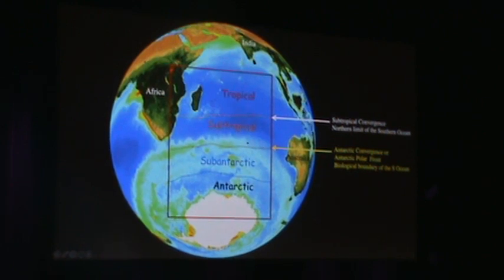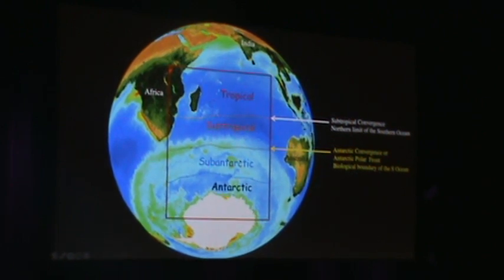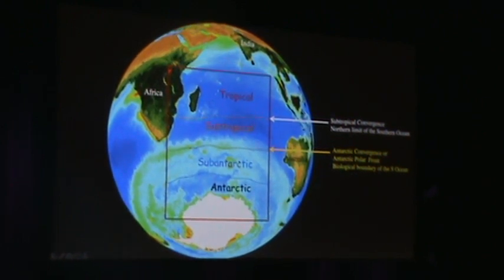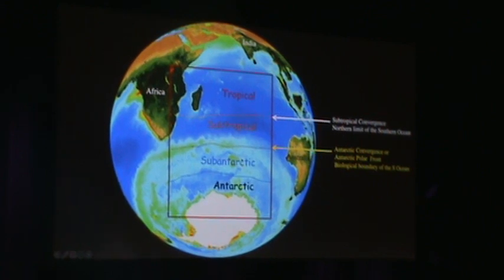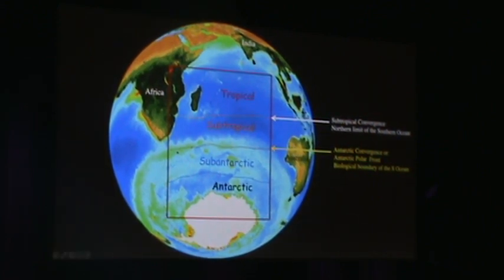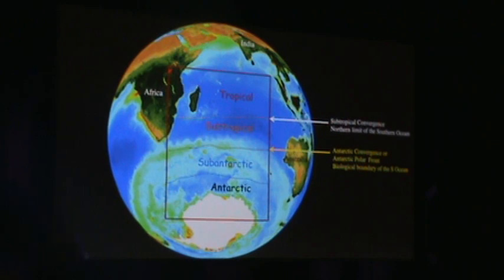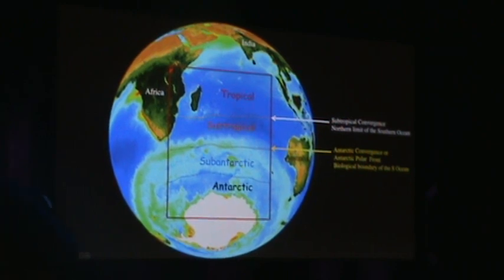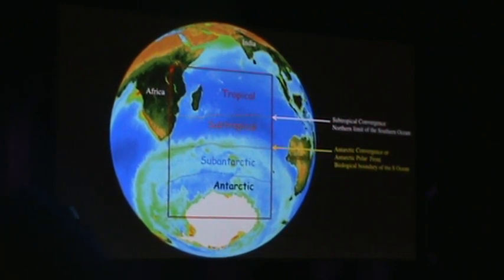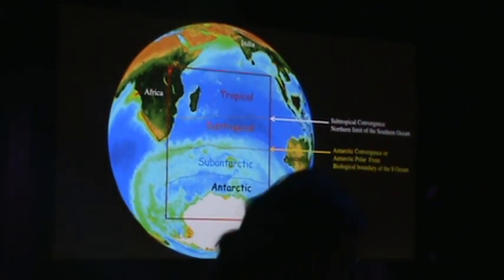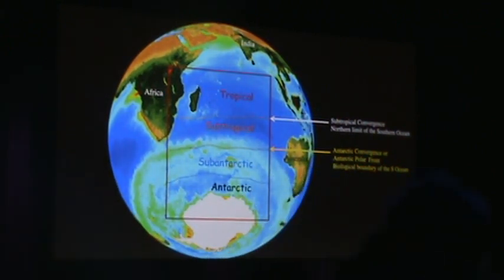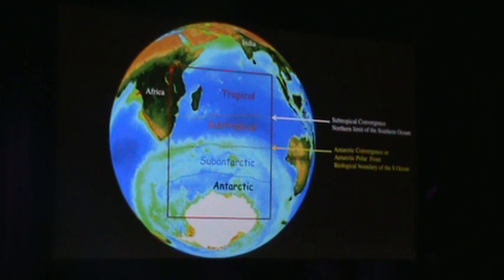Everything south of this boundary is more productive. We have much more life in the oceans than we do in the northern portions. In other words, the cold water areas are far more productive biologically than the warm areas of the oceans, so the Arctic and Antarctic have much more biological activity than the tropical regions on the planet.